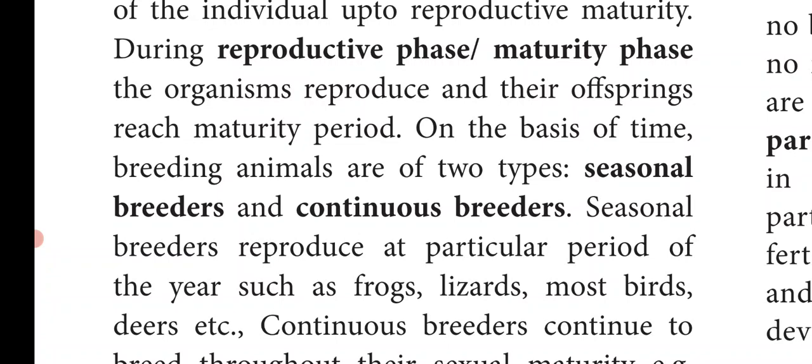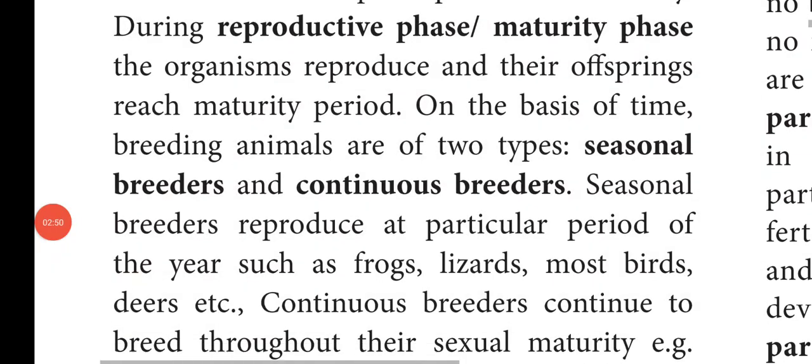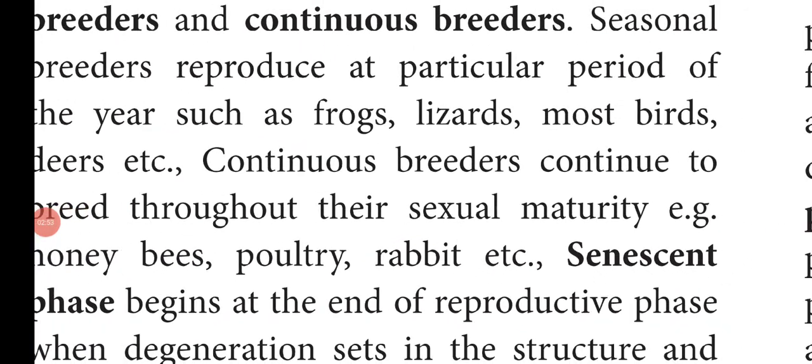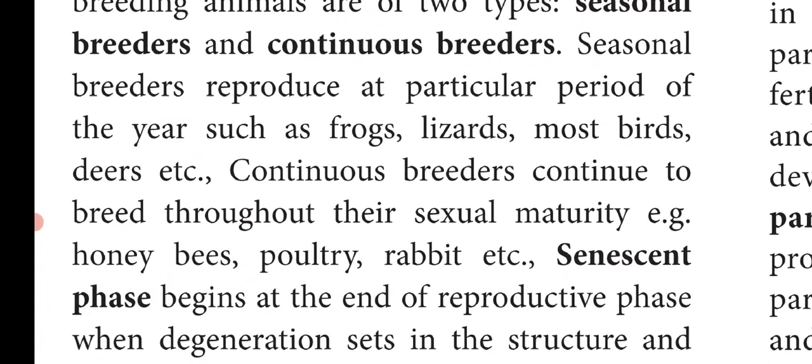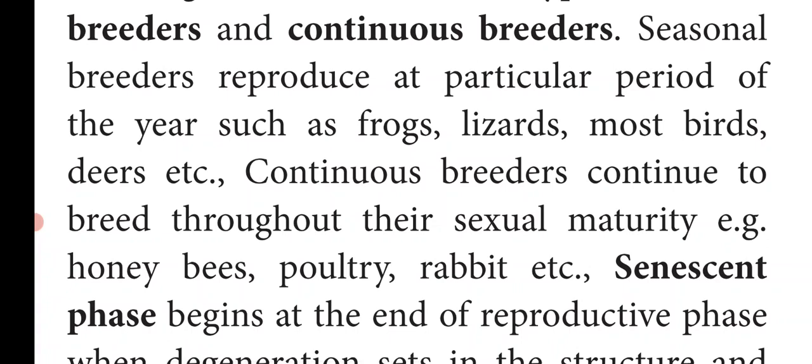On the basis of time, breeding animals are of two types: seasonal breeders and continuous breeders. Seasonal breeders reproduce at a particular period of the year, such as frogs, lizards, moose, birds, deers, etc. These animals breed only during a particular period of the year.